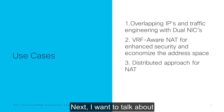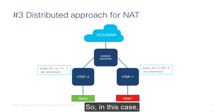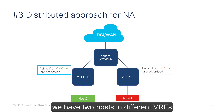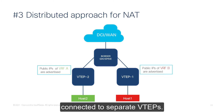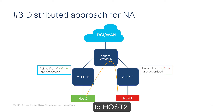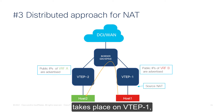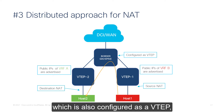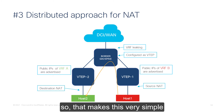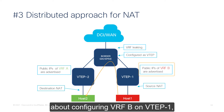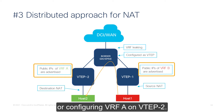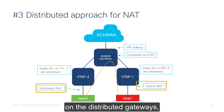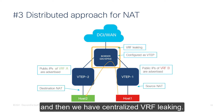Next, I want to talk about the distributed approach for NAT. In this case, we have two hosts in different VRFs connected to separate VTEPs. When traffic flows from host 1 to host 2, the NAT would take place on the local VTEPs. The source NAT takes place on VTEP 1 and the destination NAT takes place on VTEP 2. The spine, which is also configured as a VTEP, will do the route leaking. This makes it very simple and easy to configure — you don't have to worry about configuring VRF B on VTEP 1 or configuring VRF A on VTEP 2. We have source NAT and destination NAT on the distributed gateways, and then we have centralized VRF leaking.